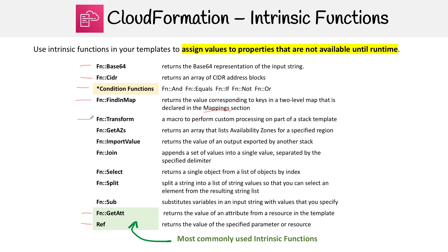Then you have Transform, which is super interesting. It's used with SAM — the Serverless Application Model — which we cover in the section right after CloudFormation. What it does is perform a macro on part of the stack, essentially changing the logic of how you write CloudFormation templates, extending CloudFormation's ability to do things it couldn't do before.